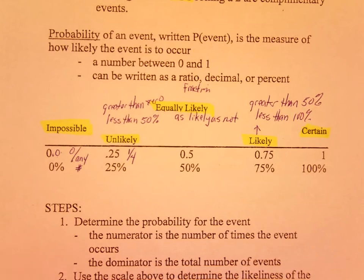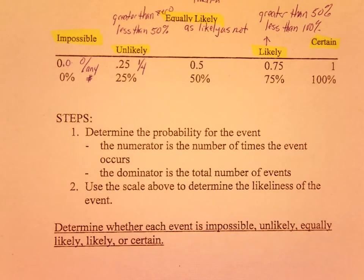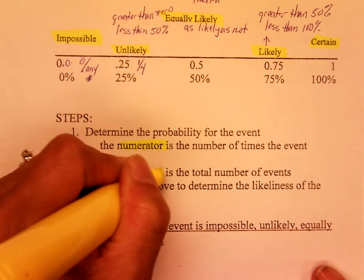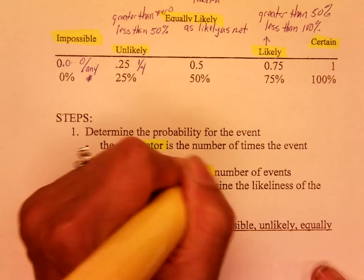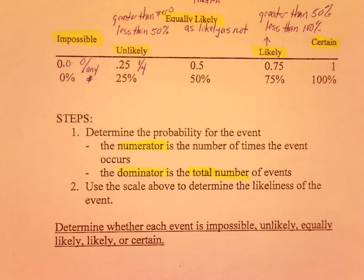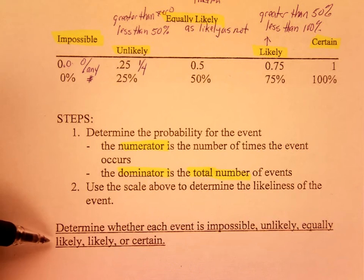Here are your steps. First, determine the probability for the event: the numerator is the number of times the event occurs, and the denominator is always the total number of events. Then use the scale to determine the likeliness of the event — whether it is impossible, unlikely, equally likely, likely, or certain.